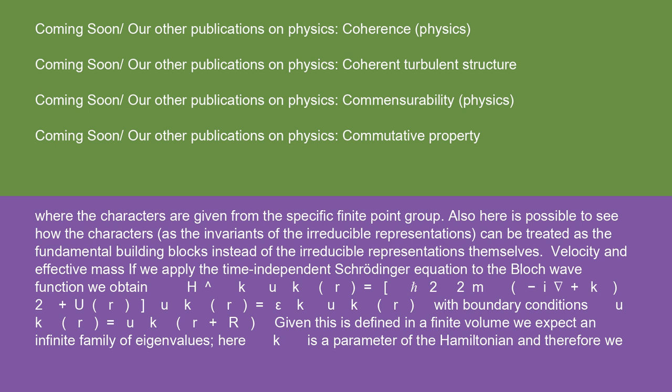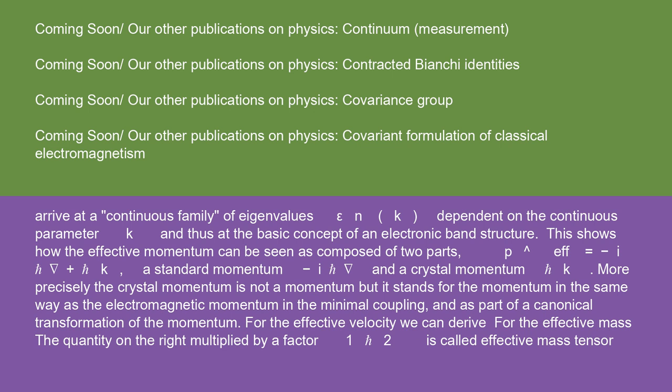Here k is a parameter of the Hamiltonian, and therefore we arrive at a continuous family of eigenvalues ε(k), dependent on the continuous parameter k, and thus at the basic concept of an electronic band structure.